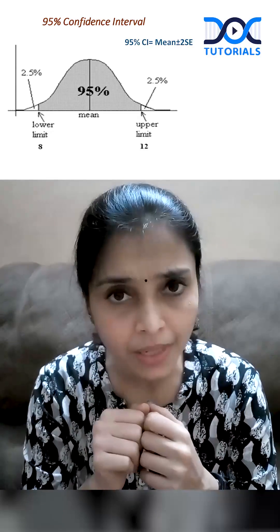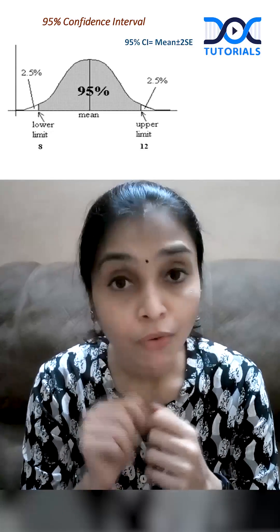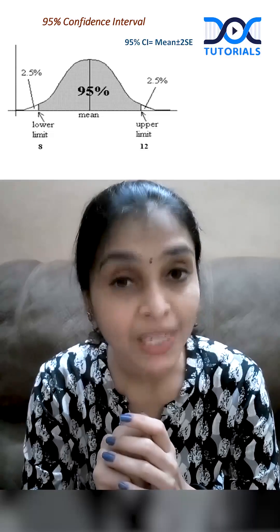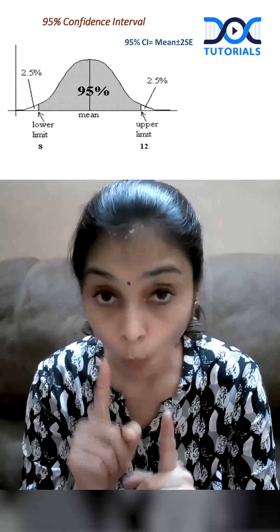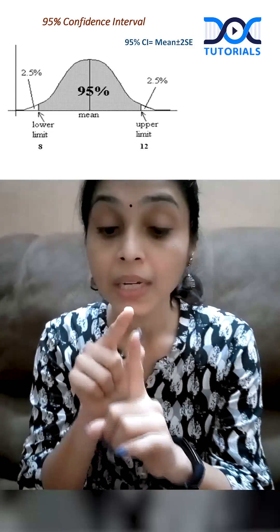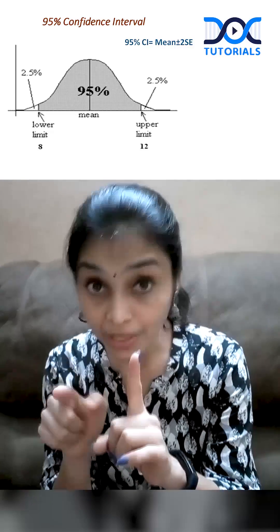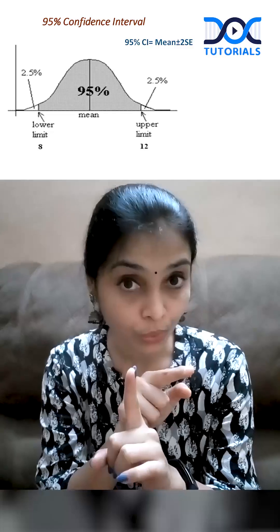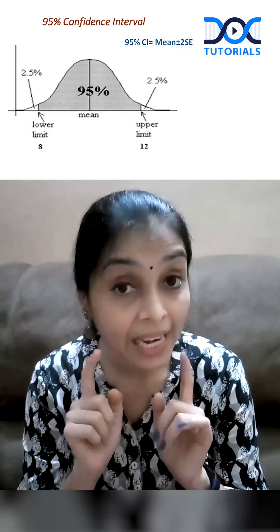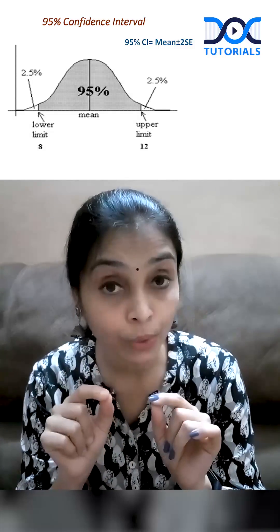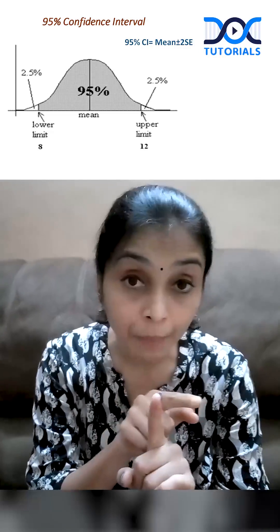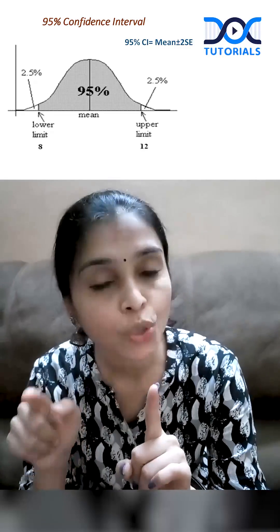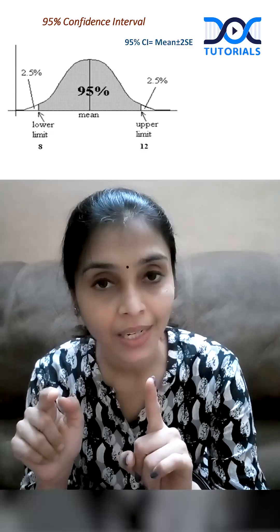Third MCQ — how to interpret this? For example, as you can see in this figure, mean hemoglobin value is 10 gram per deciliter, and standard error is 1. So, 10 plus 2 minus 2 — that means 95% of hemoglobin values in this population would lie between 8 gram percentage and 12 gram percentage.